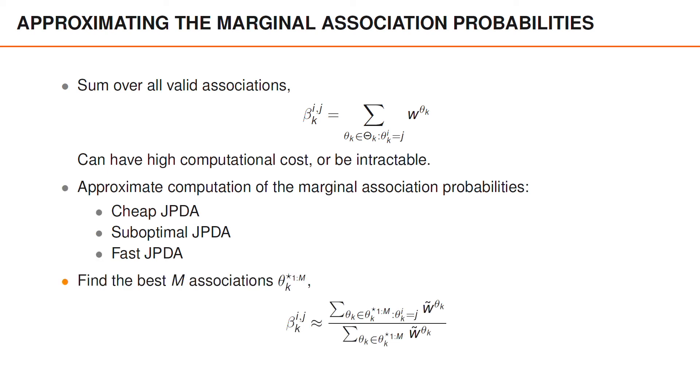Another way to approximate the marginal association probabilities is to use a method to find the M best associations, and then use only those associations. So using this method, the larger we choose M, the more accurate the approximation of beta ij will be.